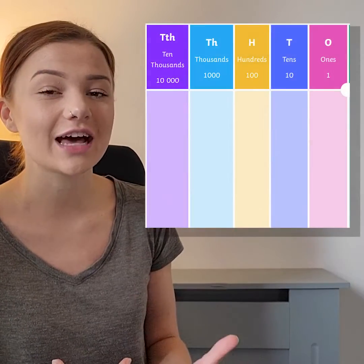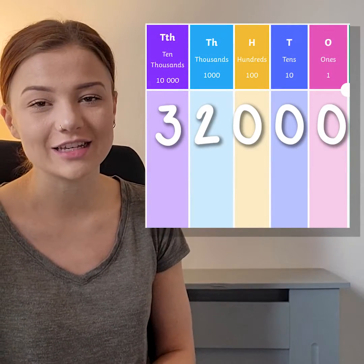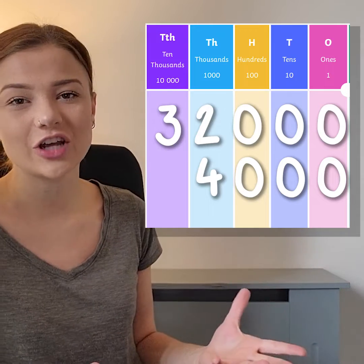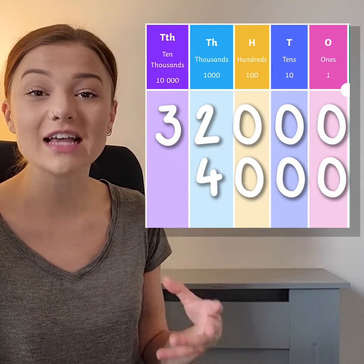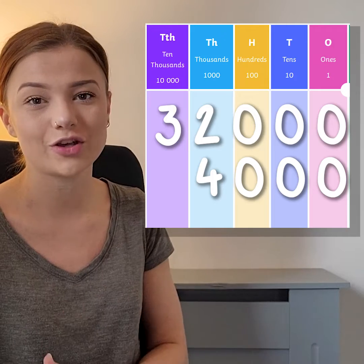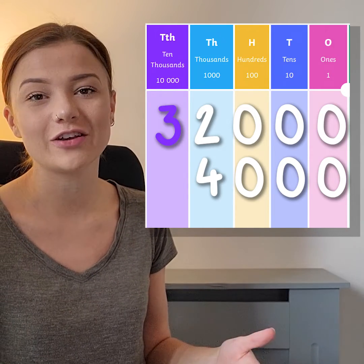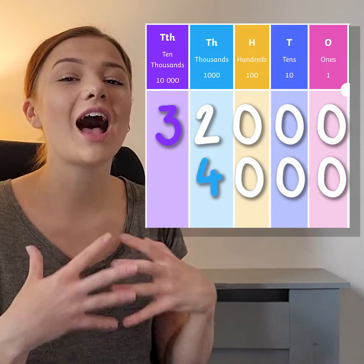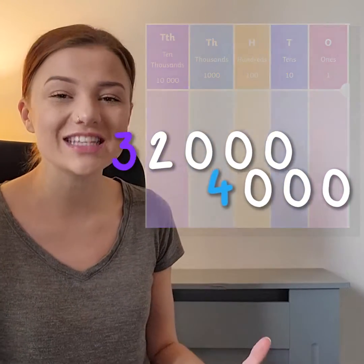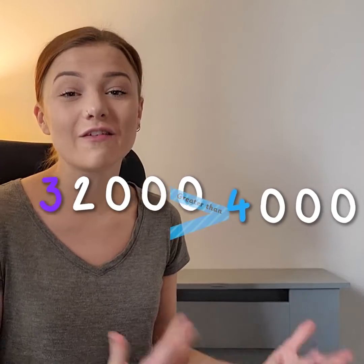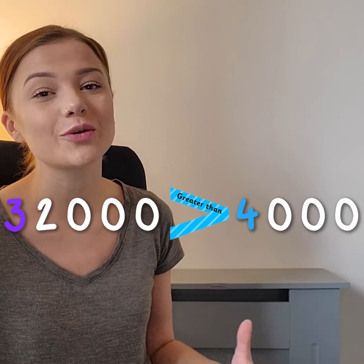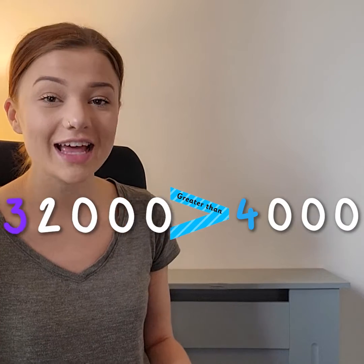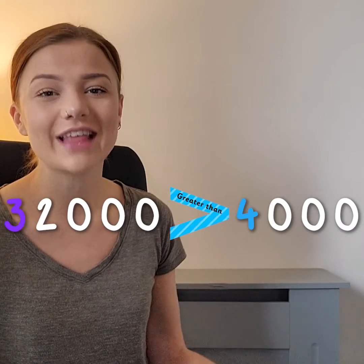When we're comparing two different numbers, we need to look at which number has the highest value digit. Let's look at 32,000 and 4,000. On the place value chart, 32,000's highest value digit is the three in the ten thousands column. Four thousand's highest value digit is the four in the thousands column. We know that the ten thousands column has a higher value, so 32,000 is greater than 4,000. We use the greater than sign to show this.